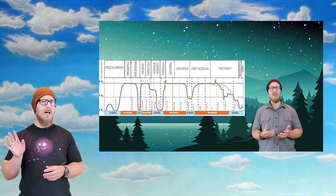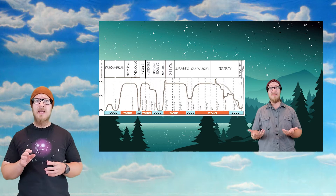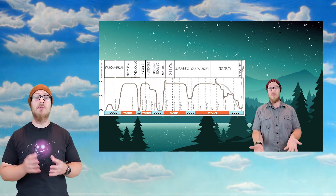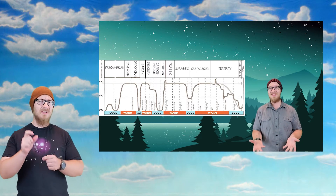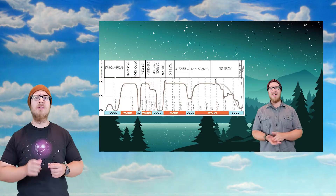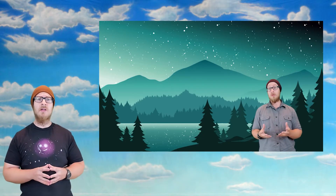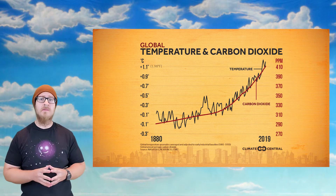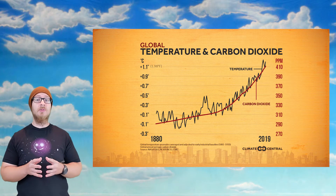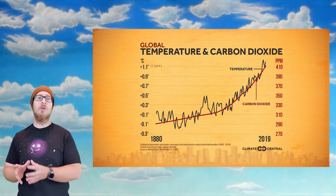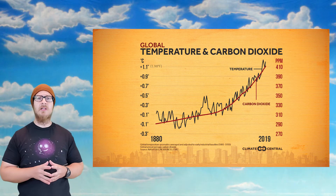In video 5, we looked at how the climate has changed naturally over time due to small changes in the Earth's orbit, or because of catastrophic events like asteroid impacts. Today's climate shift is a result of the greenhouse gases released through human activity.